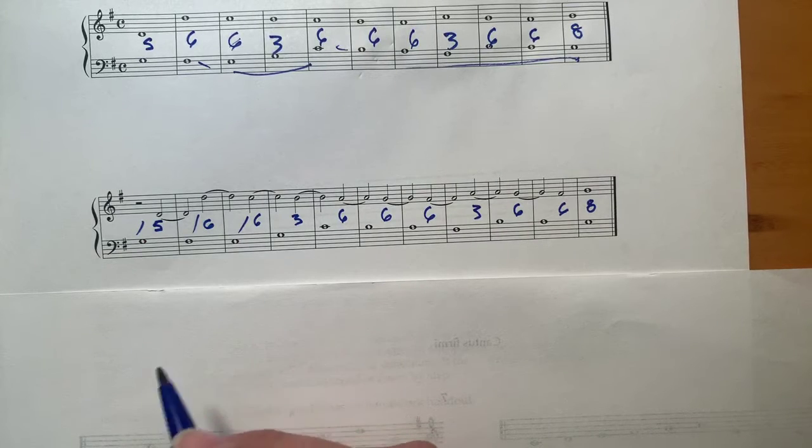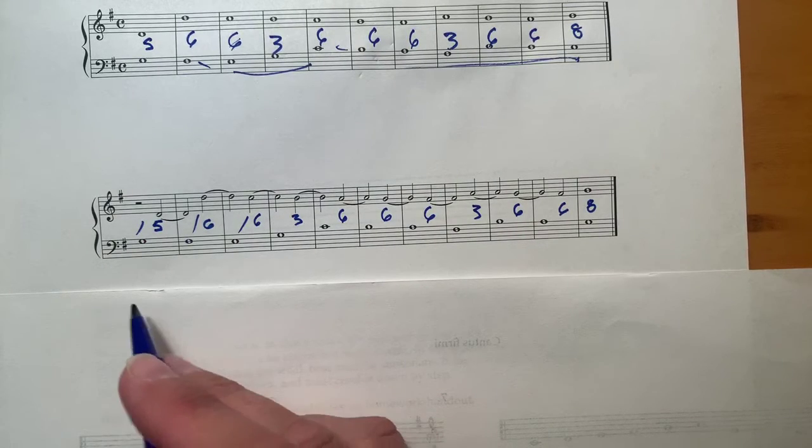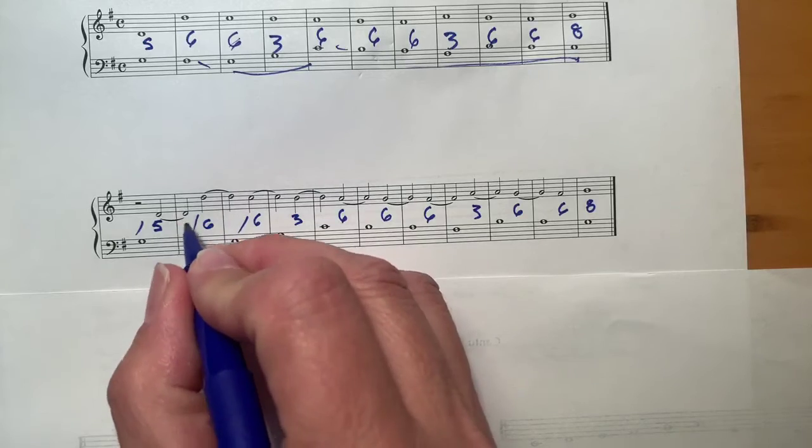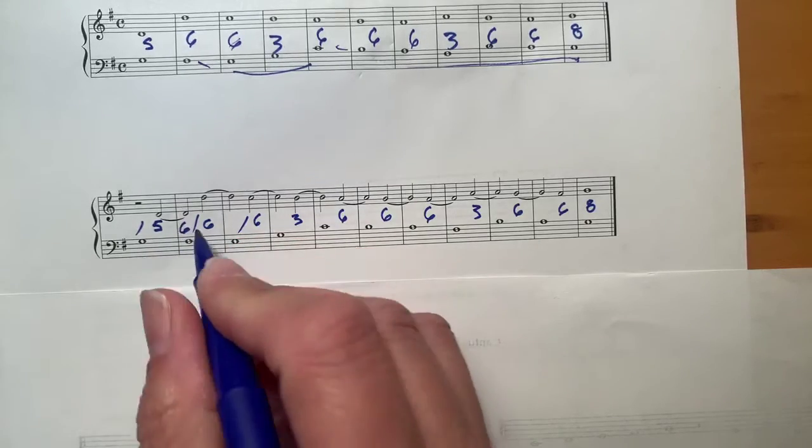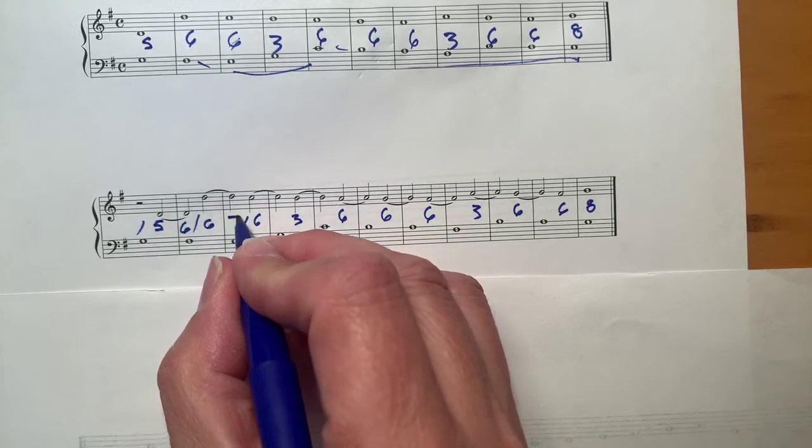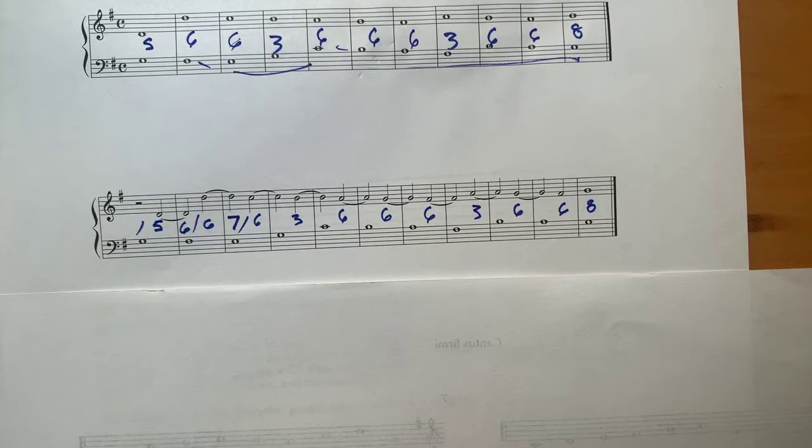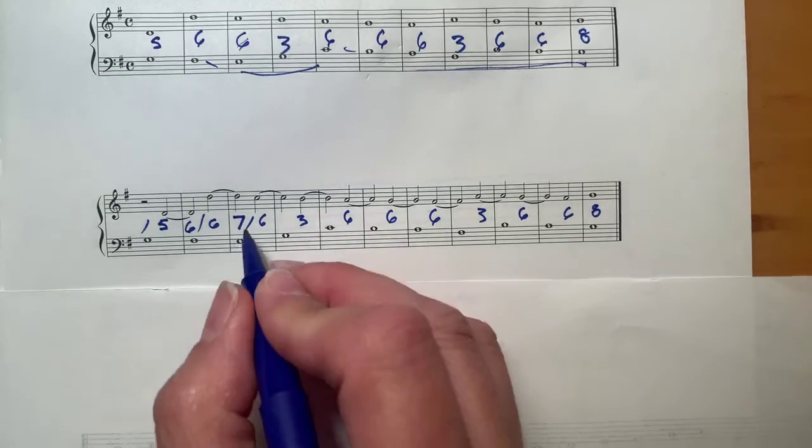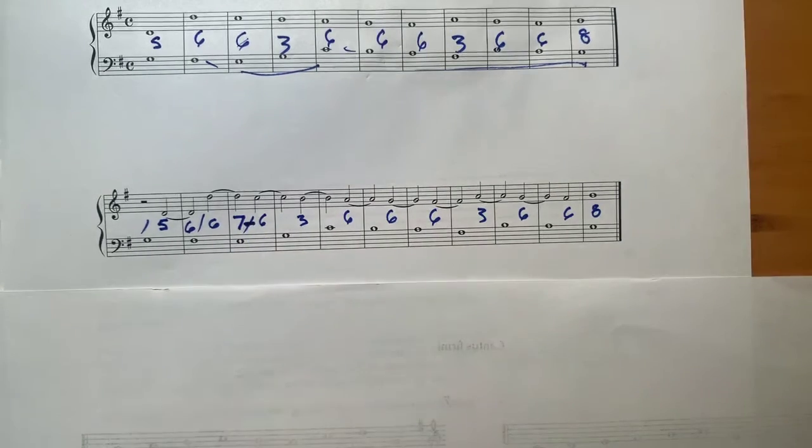What happens on the downbeat though is what's particularly interesting. If you look here, this is a sixth and it leaps up a sixth. Look right here. This is a seven. Seven is a dissonance.